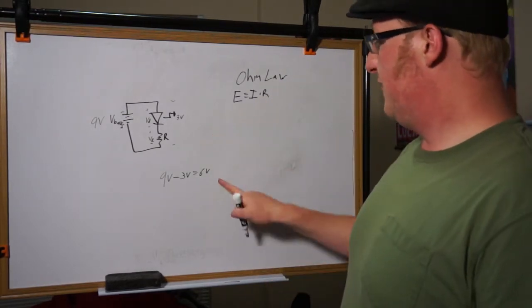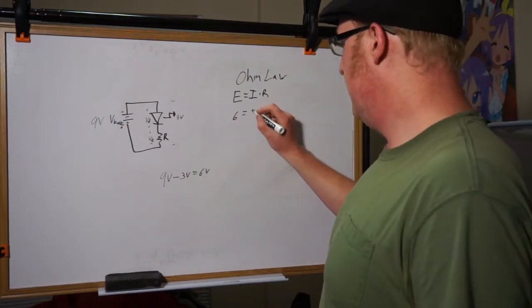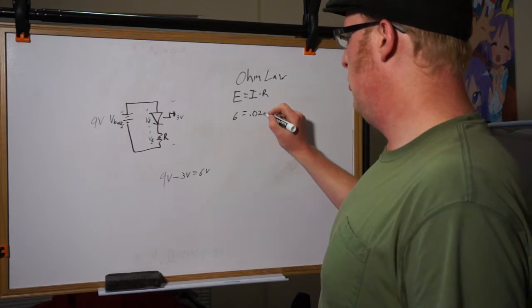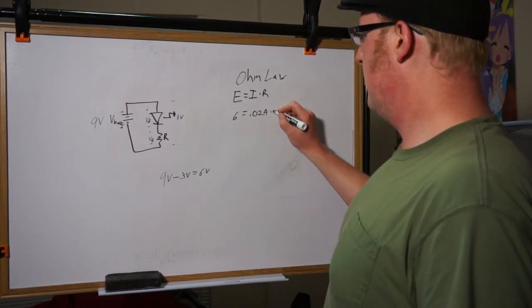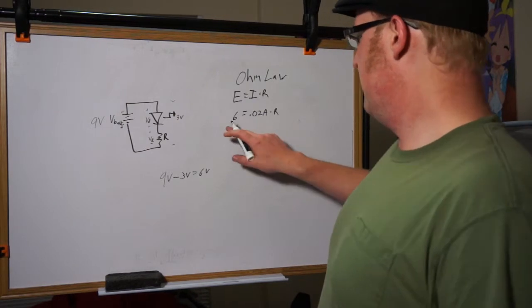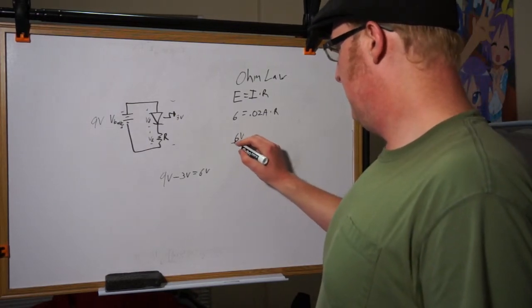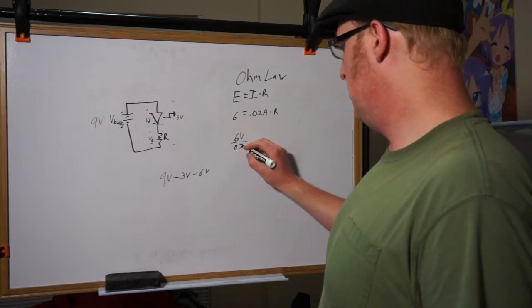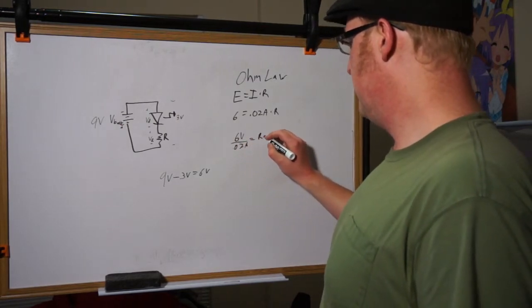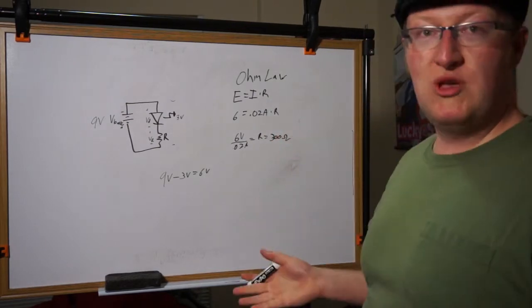So we know the voltage, that's 6 volts. We know the current, 20 milliamps. 20 milliamps happens to work out to 0.02 amperes times our unknown resistance. Straightforward enough. So moving this over here, what we get is 6 volts divided by 0.02 amperes is equal to our unknown resistance, which is equal to 300 ohms. Simple enough.